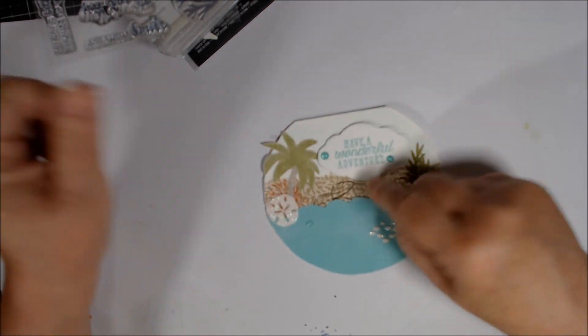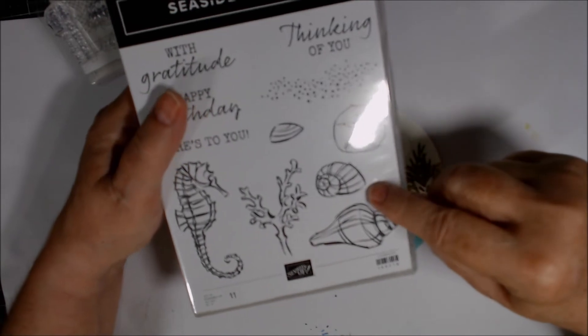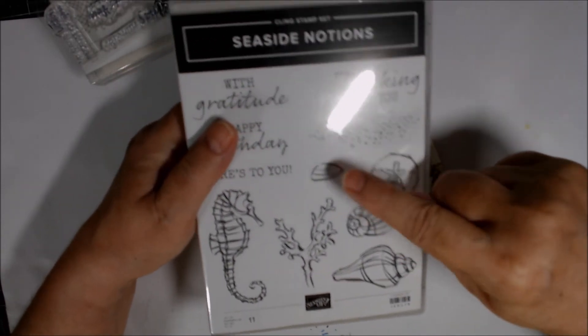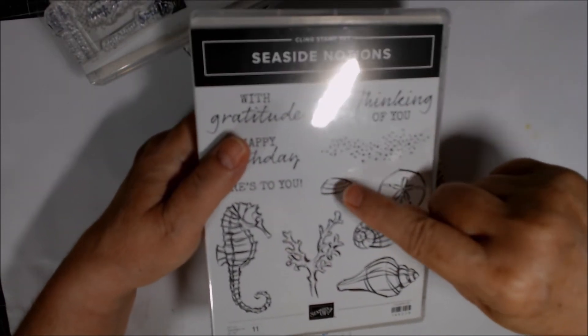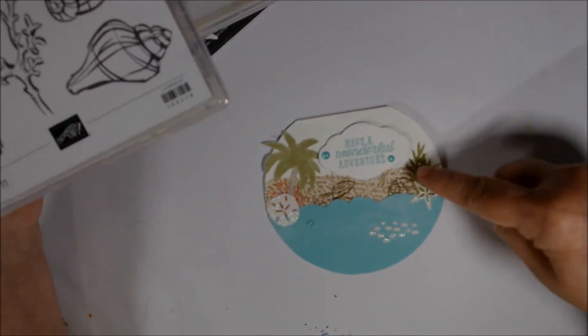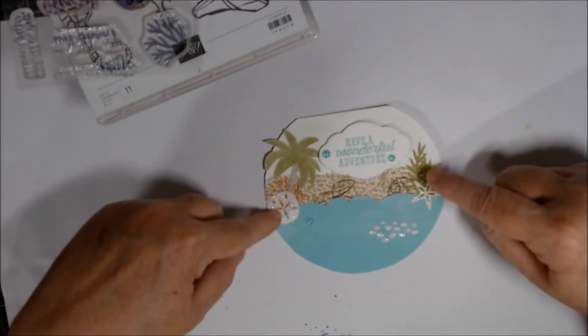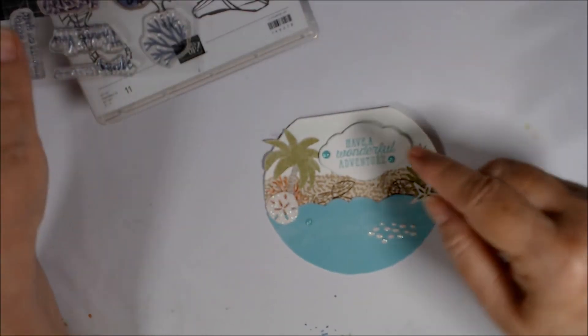And these little seashells I stamped in Early Espresso. And those were stamped out of the Seaside Notions. Just these two. And I stamped this one a couple times and this one once. Over here peeking out. And then these greeneries, the Starfish and Sand Dollar, are from the Paper Pumpkin Kit last month.